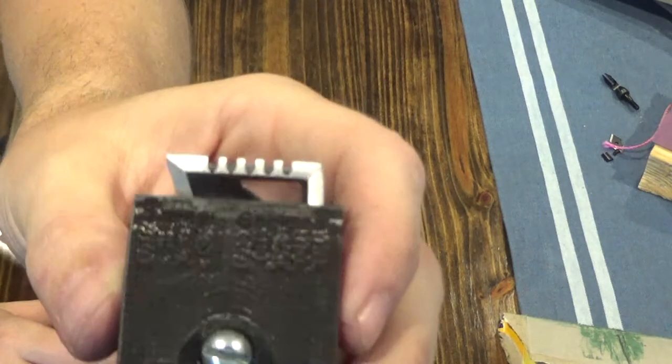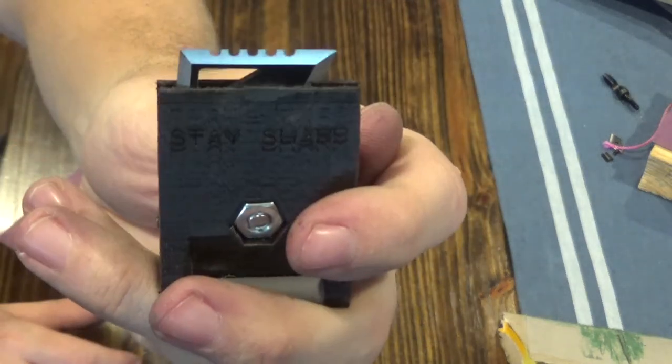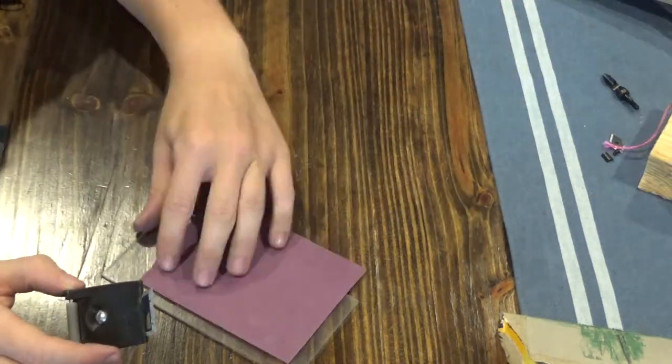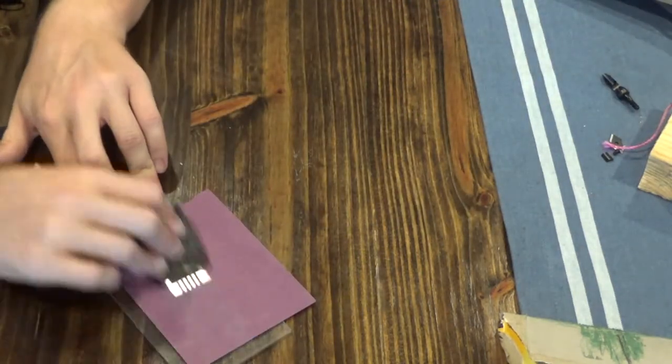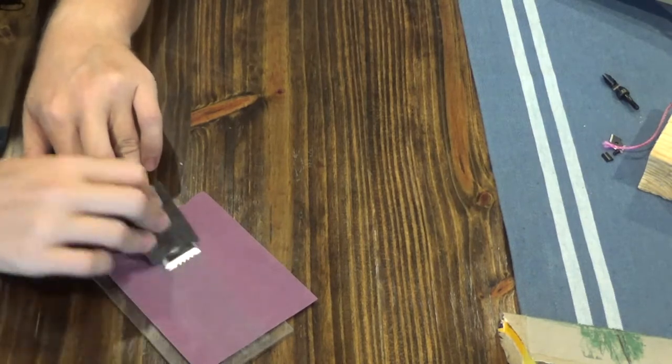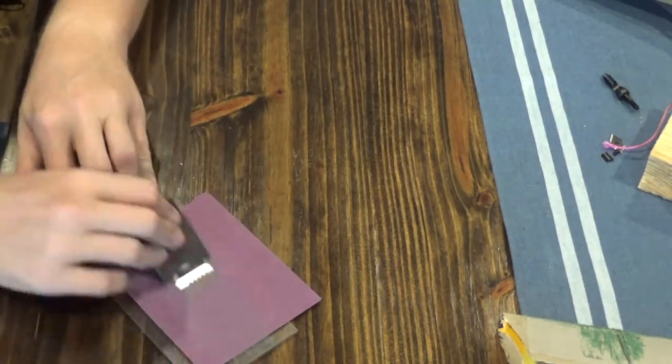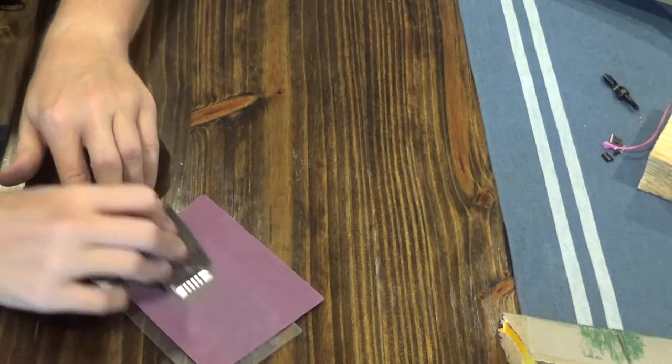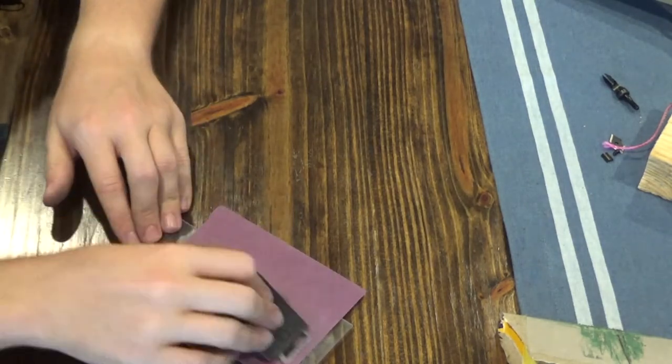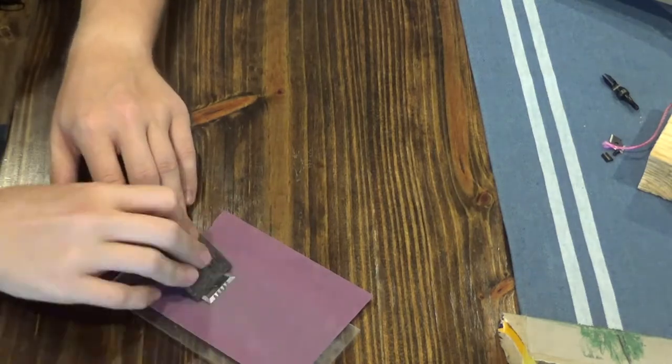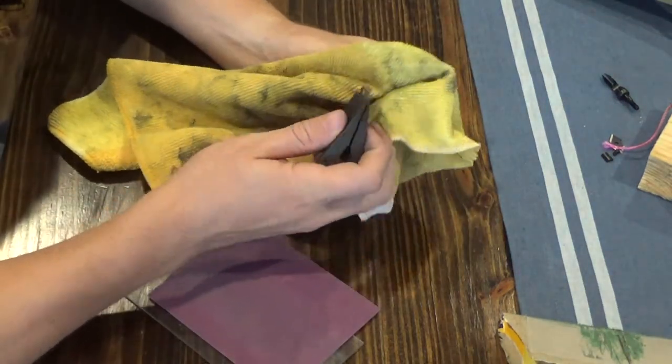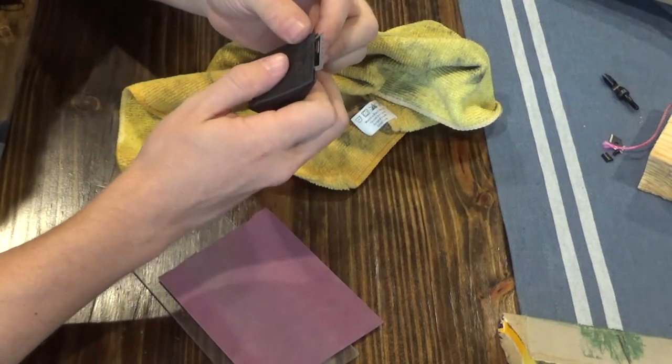Once you feel you've done enough on the 320 grit, you'll switch over to the 400. On this 400 grit you're still applying medium-ish pressure, and then the last 10 to 15 strokes on each side I lighten my pressure where I'm barely putting any pressure on it. It's always good to have a towel or cloth by because you get a lot of little shavings coming off.